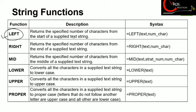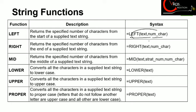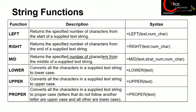The LEFT function is used to return a specified number of characters from the start of a string. Syntax: equals to LEFT(text, number of characters). The RIGHT function returns the specified number of characters from the end of the text string. Syntax: equals to RIGHT(text, number of characters). The MID function returns the specified number of characters from the middle of the text string. Syntax: equals to MID(text, starting number, number of characters).